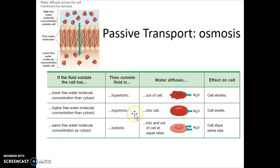Hypotonic environments are very dangerous for animal cells because we don't have a cell wall that holds us together. Hypertonic environments are less of a problem — when you're dehydrated, you're in a hypertonic environment, but it's not as quickly deadly as a hypotonic environment. Plant cells, however, have a very hard time with hypertonic environments — we'll talk about those later.